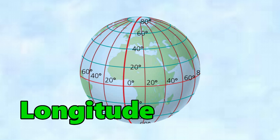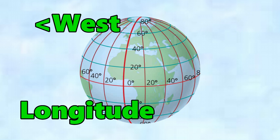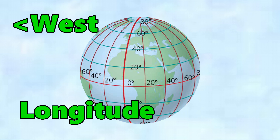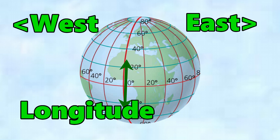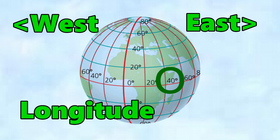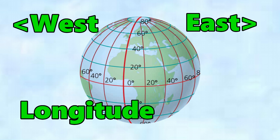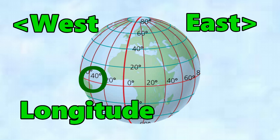Now let's look at the longitude. West is this direction and east is this direction, measured from the Greenwich meridian — the Greenwich Observatory in London. Here is 20 degrees east, 40 degrees east, 60 degrees east, 80 degrees east, and of course we can go all the way round to the dateline at 180. Heading west we have 20, 40 and 60 degrees.